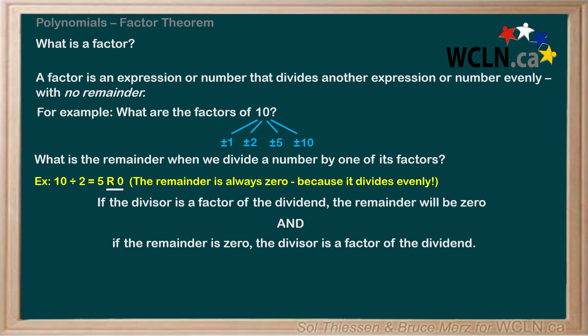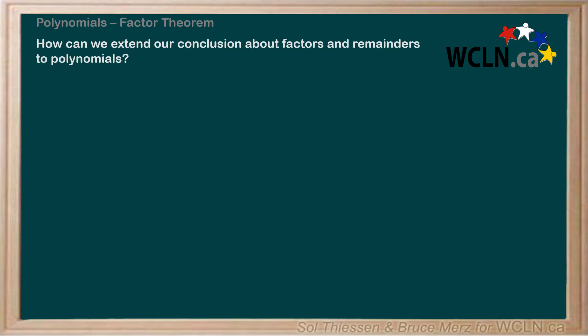The opposite is also true. If we had been told that the remainder is 0, we would know that the divisor, 2, is a factor of the dividend, 10. With that in mind, how can we extend our conclusion about factors and remainders to polynomials? Why don't we try to learn through an example?